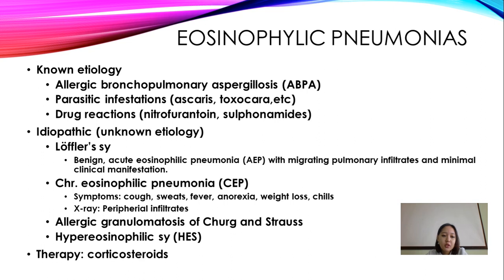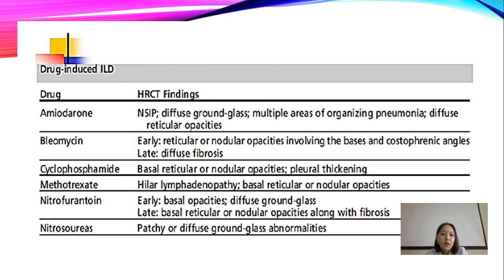Chronic eosinophilic pneumonia symptoms include night sweats, fever, anorexia, weight loss, and chills. Chest X-ray shows peripheral infiltrates. Allergic granulomatosis (Churg-Strauss syndrome) and hypereosinophilic syndrome are also included. Therapy uses corticosteroids due to eosinophilic inflammation in the lungs.